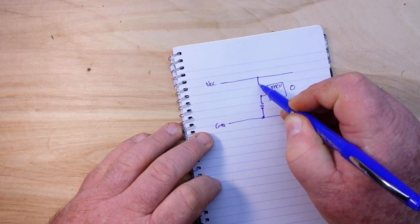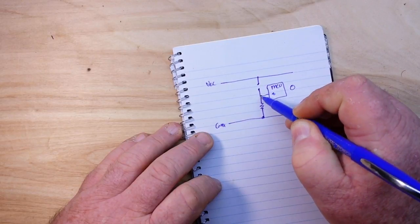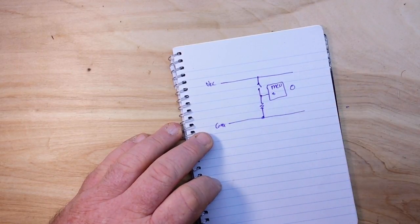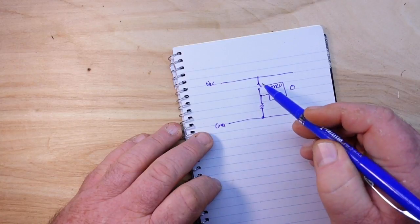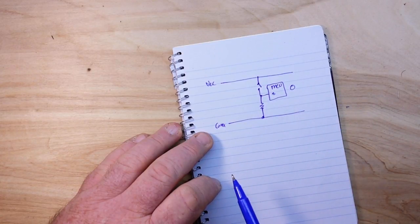And then we have from VCC, in between VCC in here is our switch, and when we connect the switch we will get the logical one.